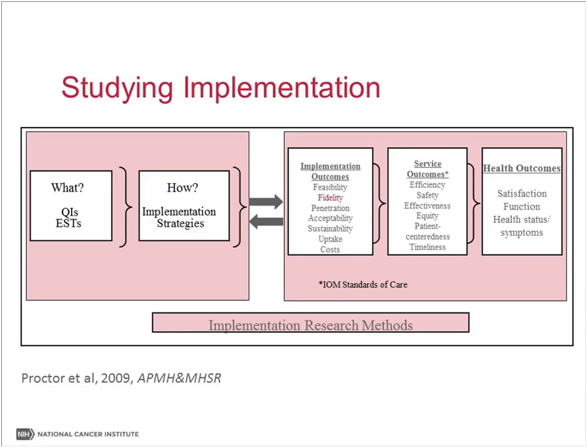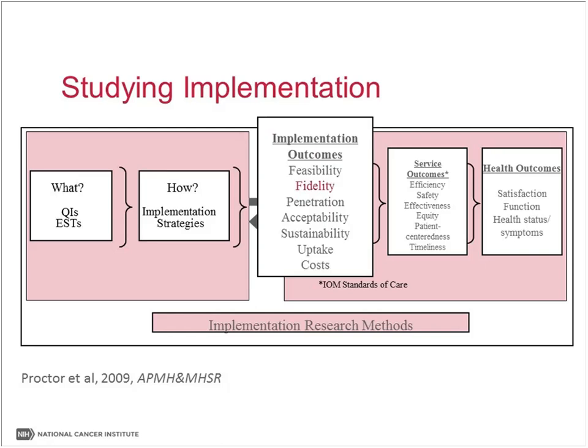Many of you may have seen this already. This is a 2009 paper that Enola Proctor led that some of us had the fortune of being involved in. It basically lays out that broad look at implementation science — we have different interventions on the left, we focus on how we get them implemented through implementation strategies, and then we have a whole set of outcomes that those of us studying dissemination and implementation are keen on. Fidelity is highlighted as one of those key implementation outcomes.